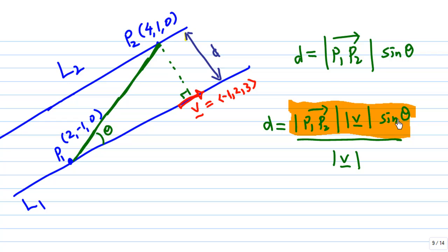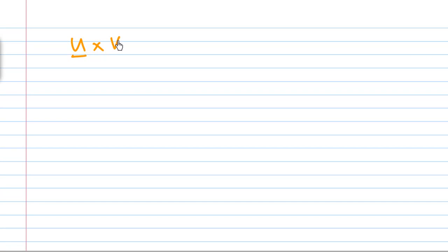The expression on the numerator, you will recall, is the magnitude of the vector cross product U cross V. This is going to be the length of U, the length of V, sin theta, times a unit vector perpendicular to U and V.